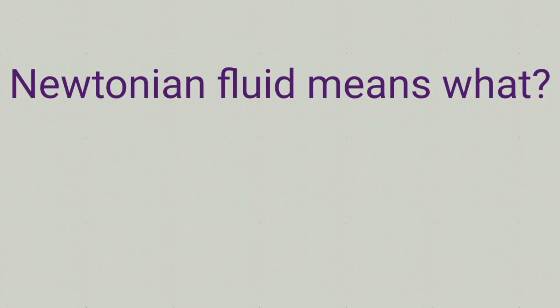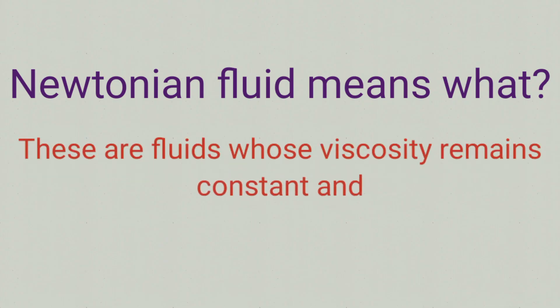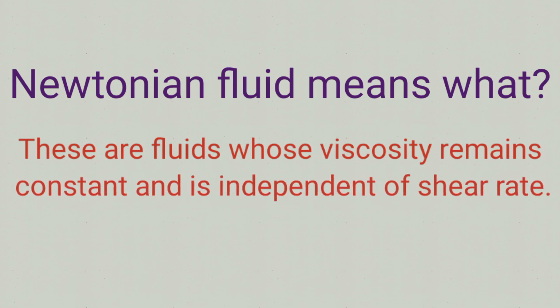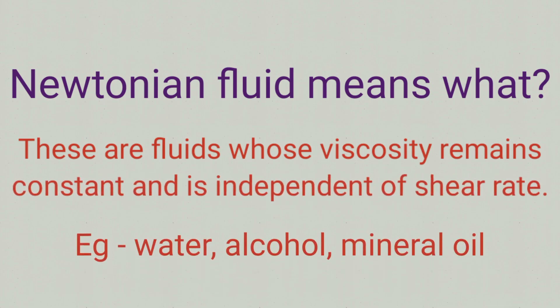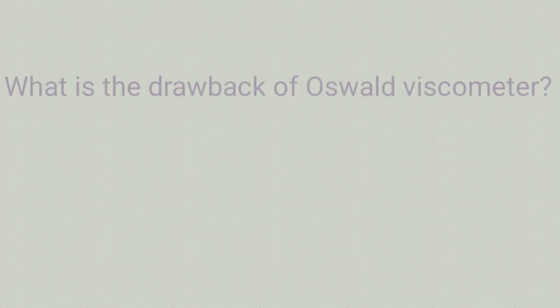Newtonian fluid means what? The answer is: These are the fluids whose viscosity remains constant and is independent of the shear rate. Examples of Newtonian fluid are water, alcohol, mineral oil, etc.